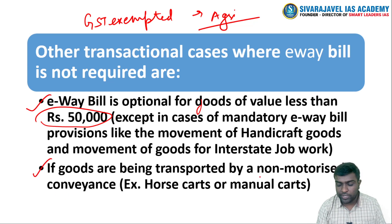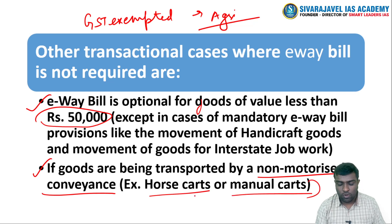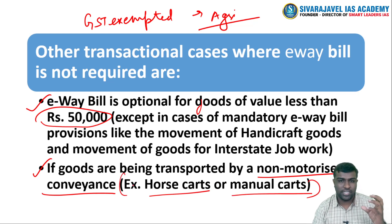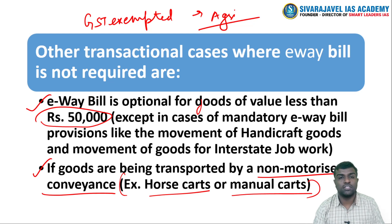If goods are transported by a non-motorized conveyance — for example, horse carts, manual carts, or any other non-motorized form of transportation — there is no need for an e-waybill. These are some of the exemption criteria.